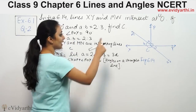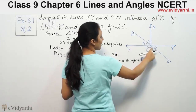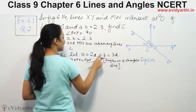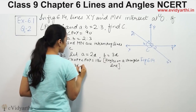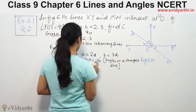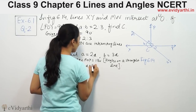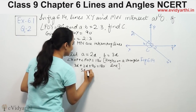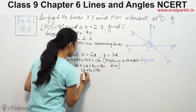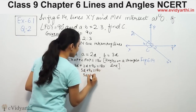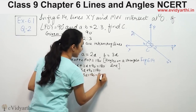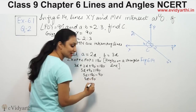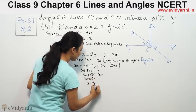So angle XOM is b, which equals 3d, and angle MOP is a, which equals 2d. Substituting into the equation: 3d + 2d + 90 = 180°. That gives us 5d + 90 = 180°, so 5d = 90°, meaning d = 90 ÷ 5 = 18°.